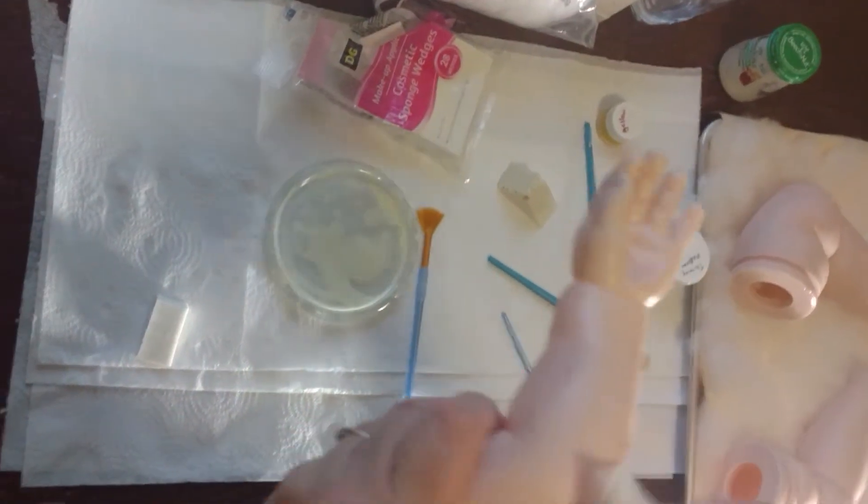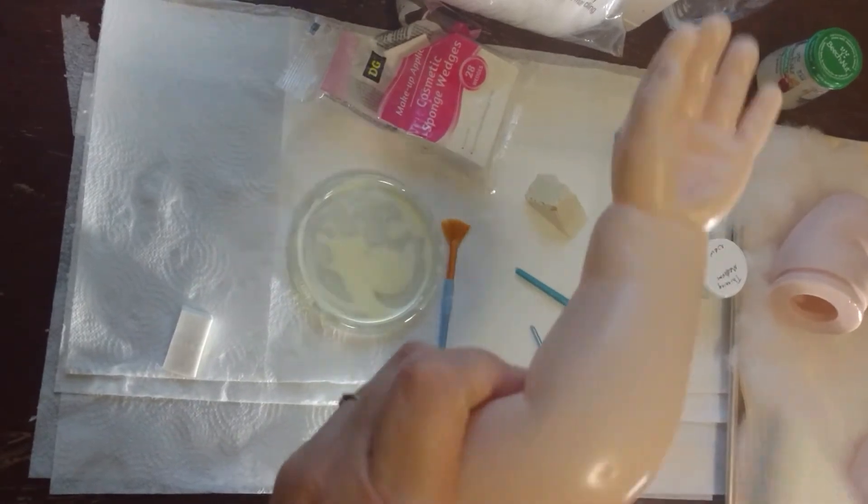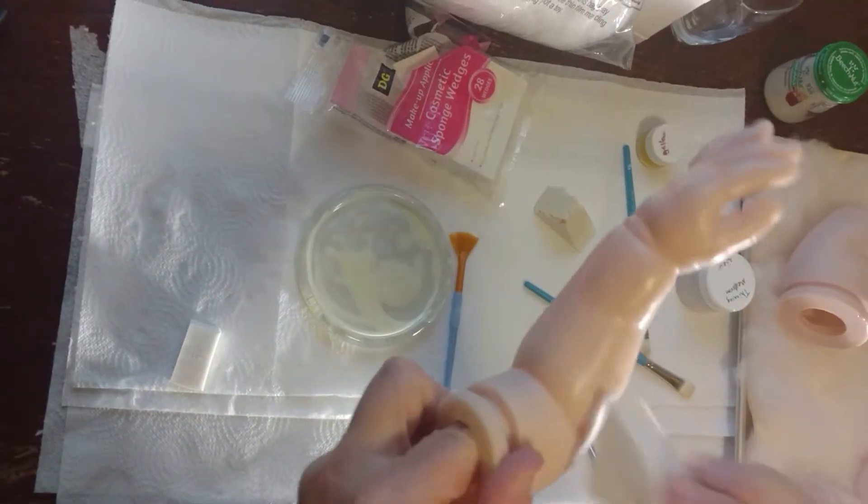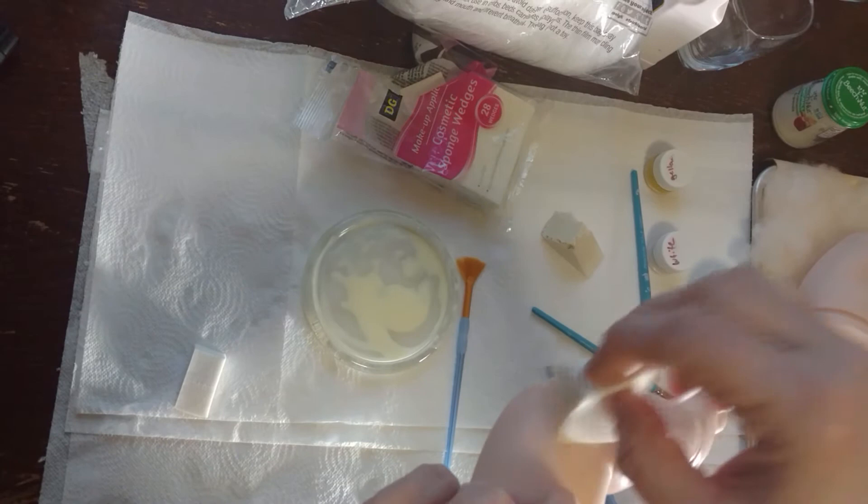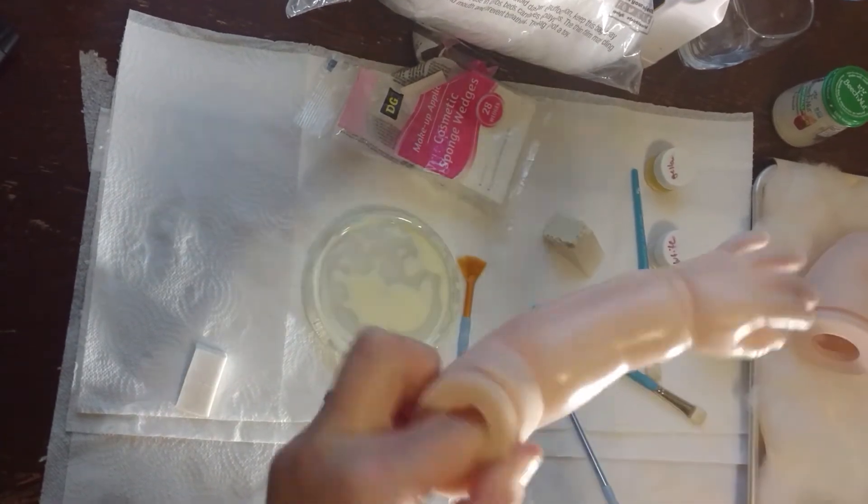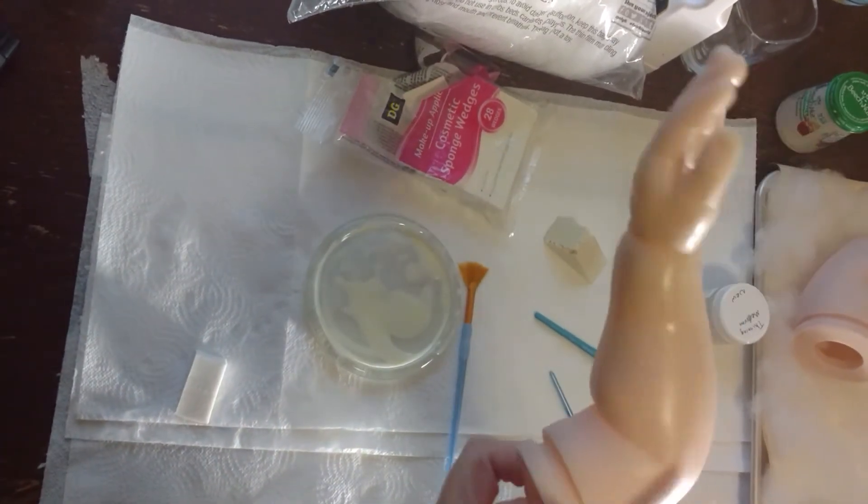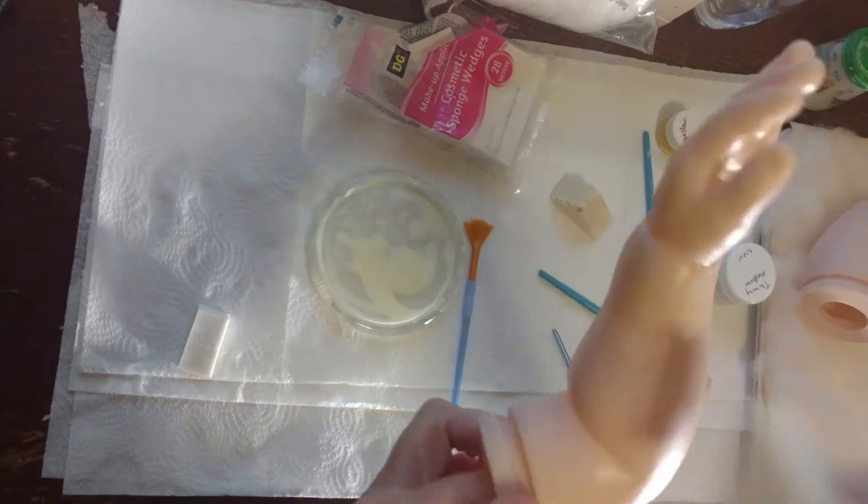You don't want to leave any lines or have it really thick. It's a very thin coat of the yellow white thinning medium all over. And then when I'm done with this step, I will bake and then we'll be on to the next step.